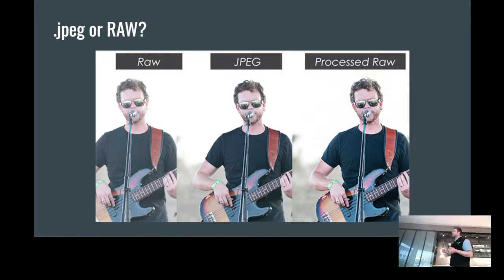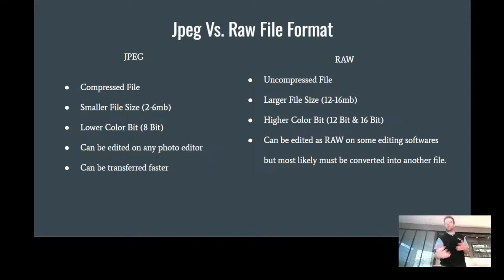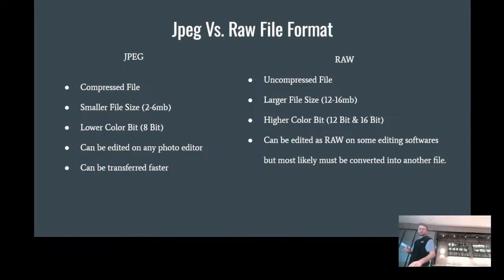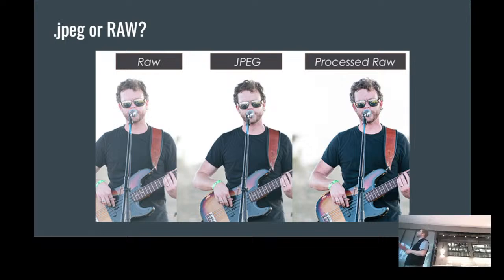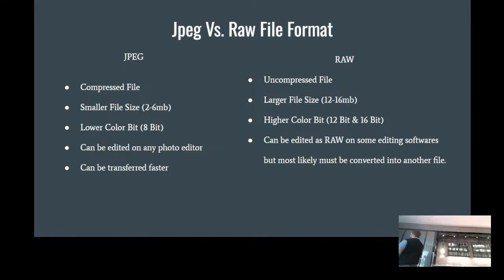When we compare JPEG to processed RAW, and actually take the time to edit our photo, we can take something like this gentleman playing bass and turn it into something with more color, more saturation, more life. The big difference is that because it's a non-compressed file, when we edit the RAW we make significant changes and can physically see those differences. The proof is there in the image quality — the color and detail really come off the page with an uncompressed file.